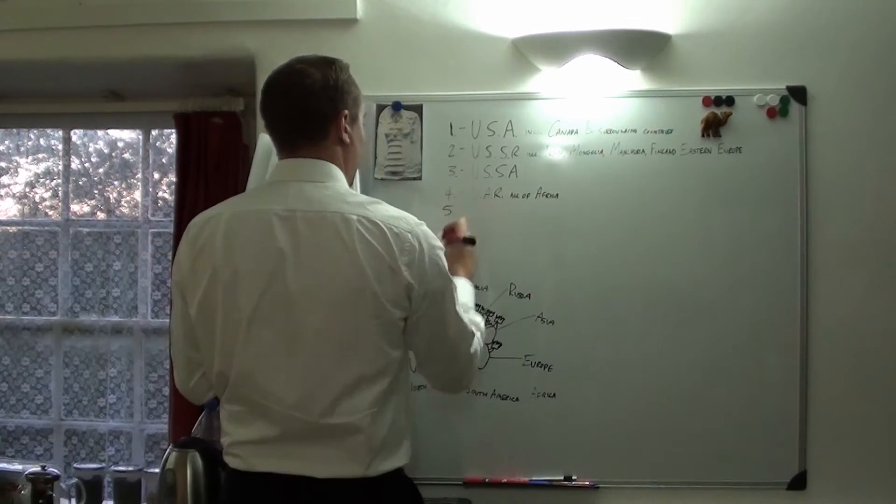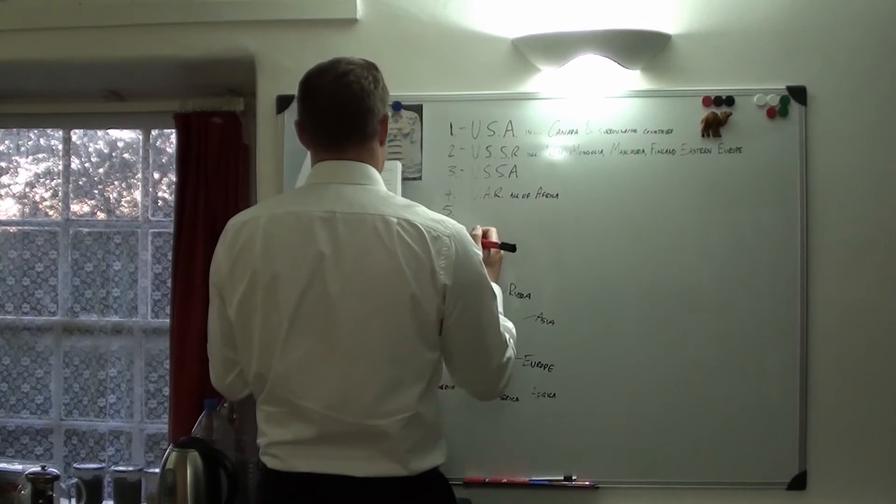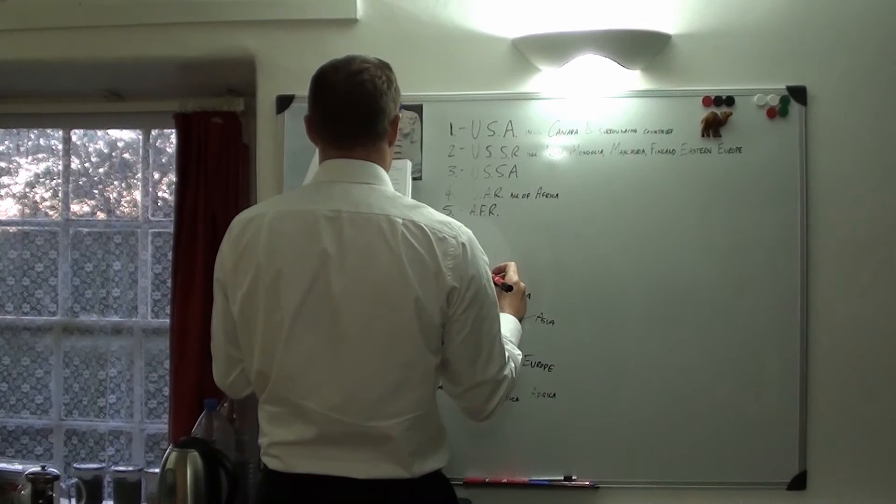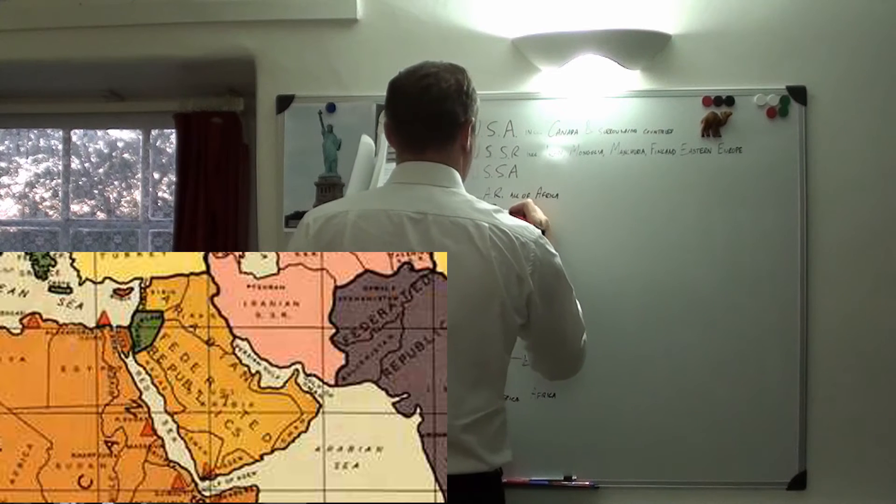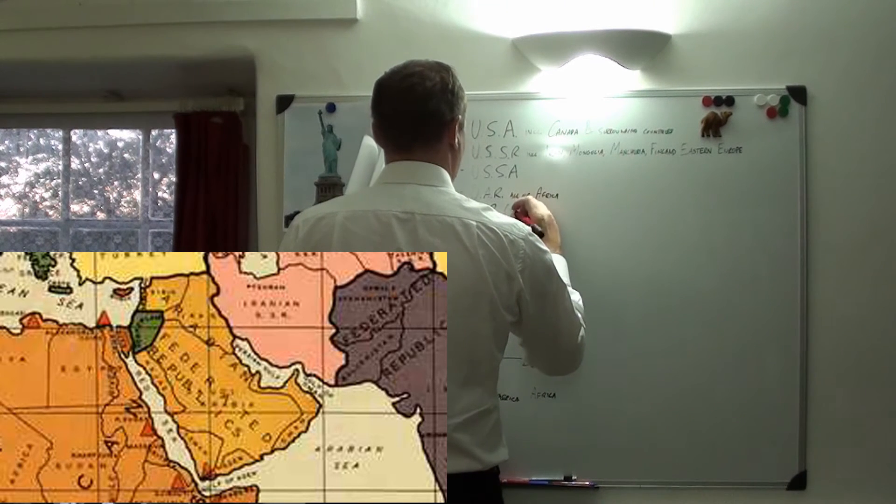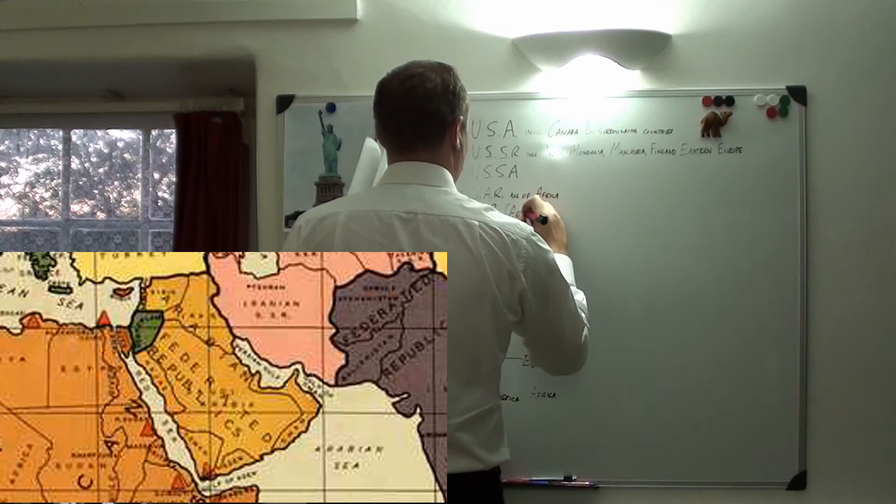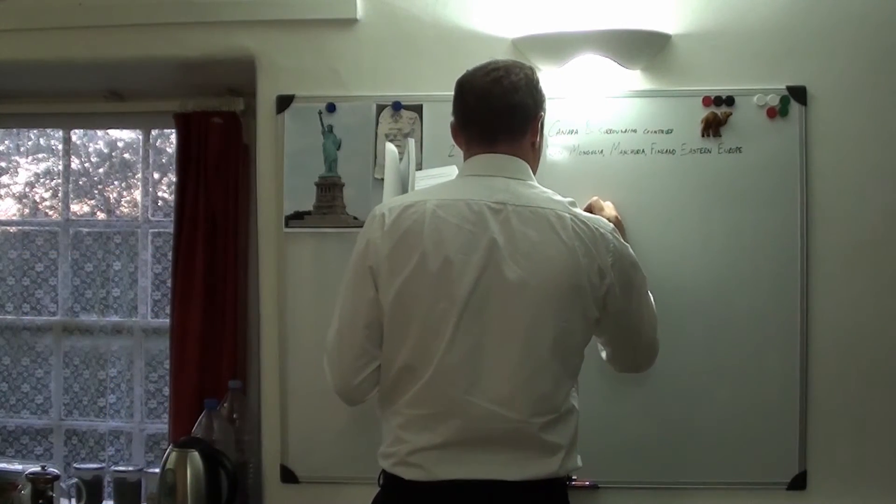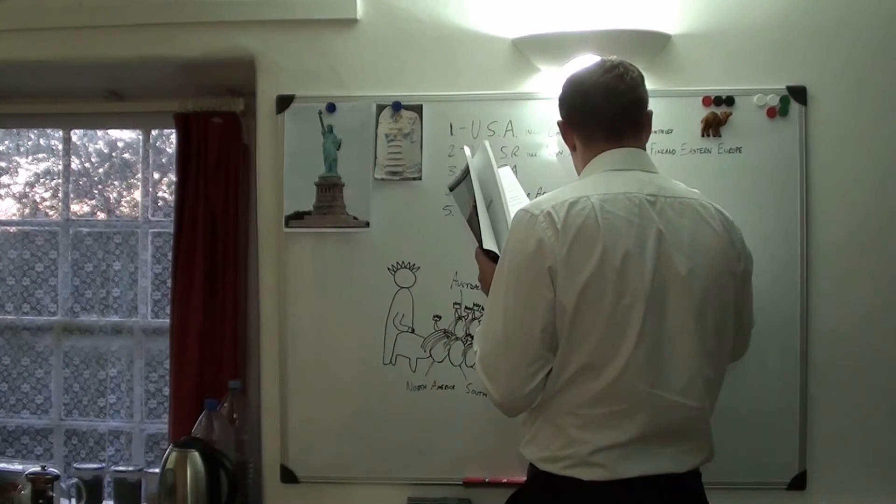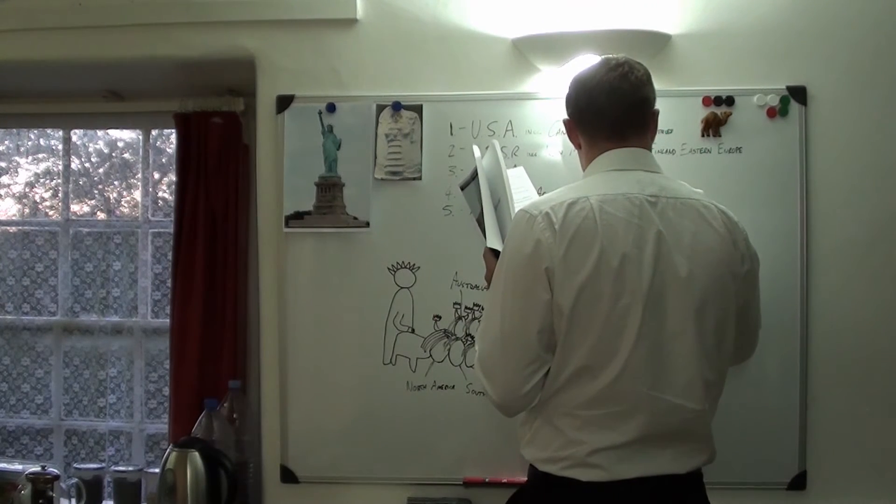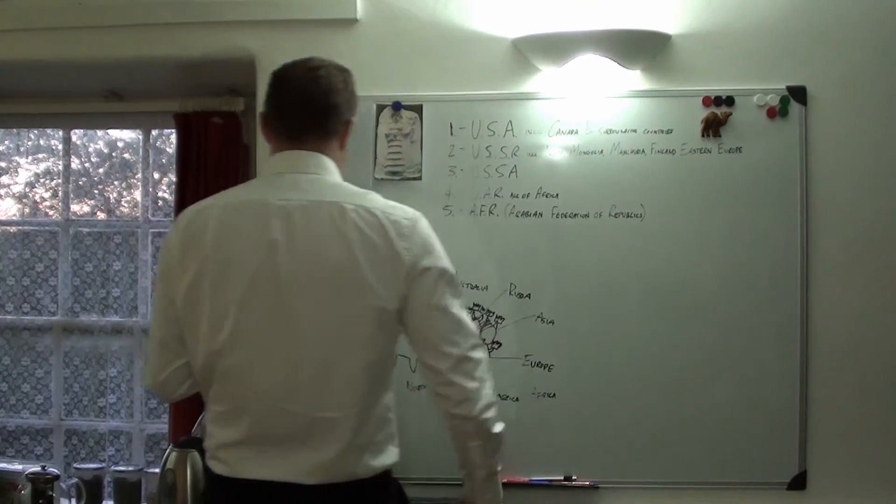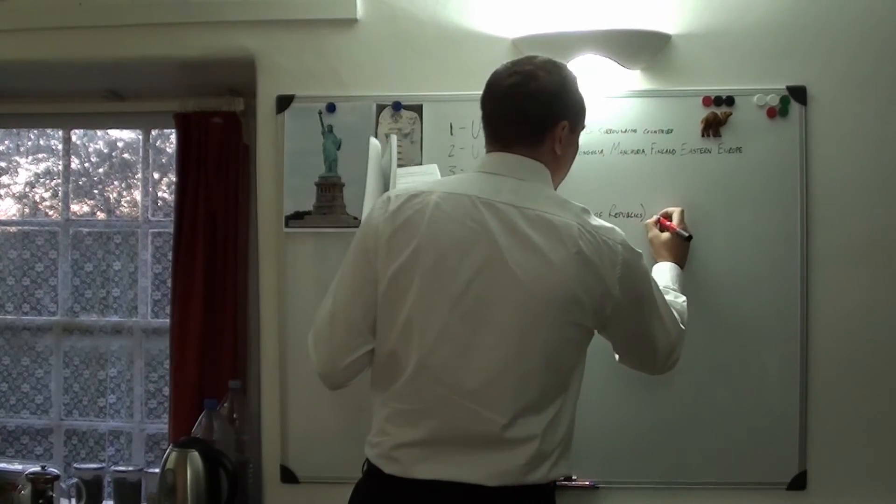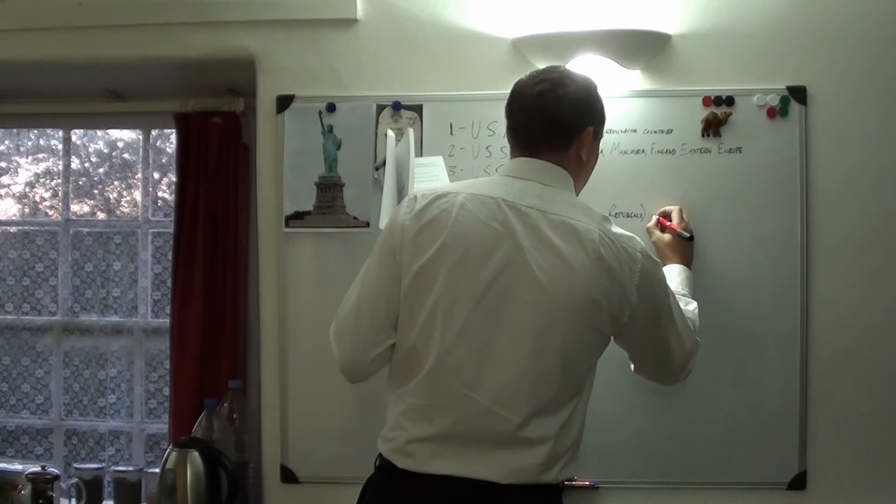Number five, the AFR, the Arabian Federation of Republics. This is most of the Middle East.